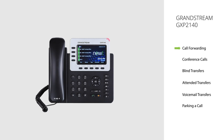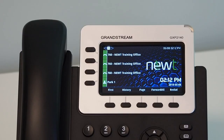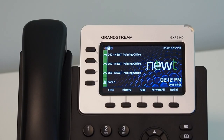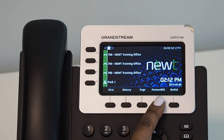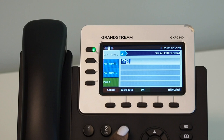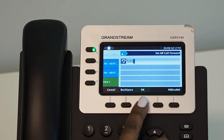Call forwarding. This feature will allow you to forward your extension to an alternate internal extension or a 10-digit telephone number. Using the soft keys located below the screen of the handset, press the Forward All soft key. Enter the 10-digit phone number or internal extension you would like your calls forwarded to, then select the OK soft key to save your entry.